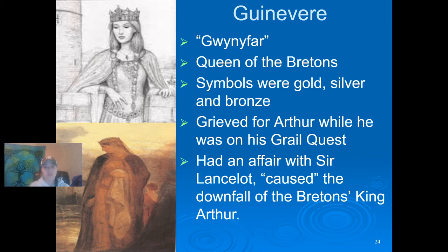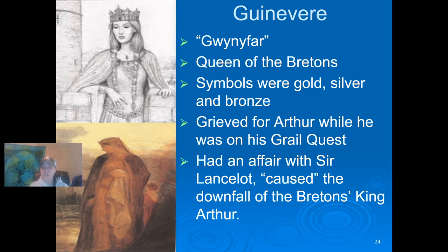Guinevere appears in the works of Geoffrey of Monmouth's Historia Regum Britanniae, in the works of French poet Chrétien de Troyes, and in Robert de Boron, as well as in the Vulgate Cycle, and then again in Sir Thomas Malory's Le Morte d'Arthur — those are all the writers of King Arthur and the legend. According to Geoffrey of Monmouth, Guinevere is descended from a noble Roman family and known as the loveliest woman in all the island. In later romances, she is known as the daughter of Leodegrance, who was the previous owner of the famous Round Table.